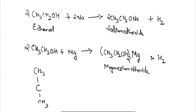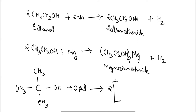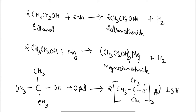Taking an example of a tertiary alcohol, 1,1-dimethyl hexanol reacting with aluminium gives aluminium tertiary butoxide with 3H₂ gas released.